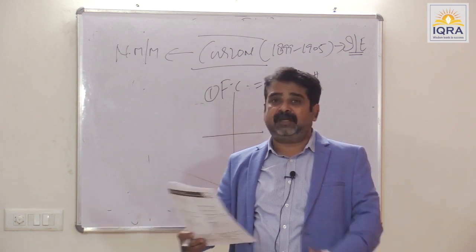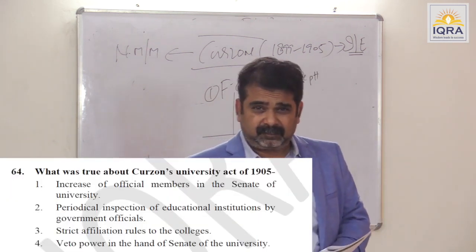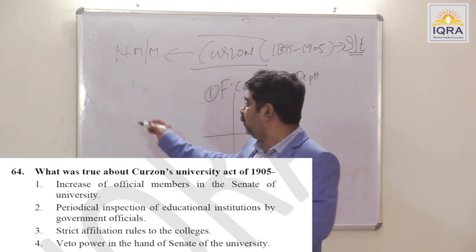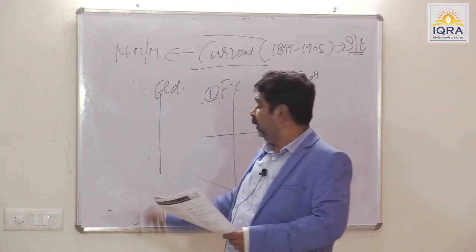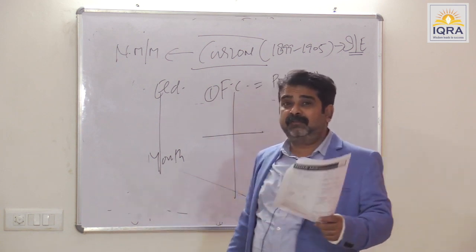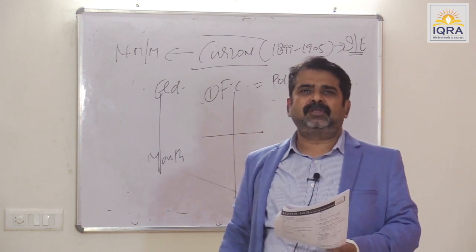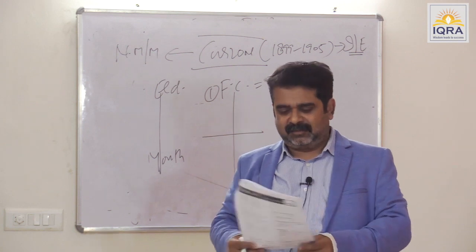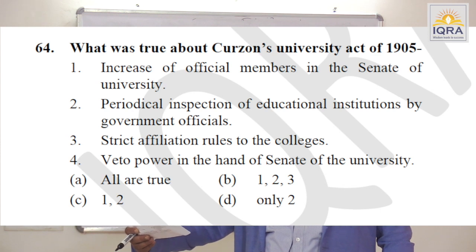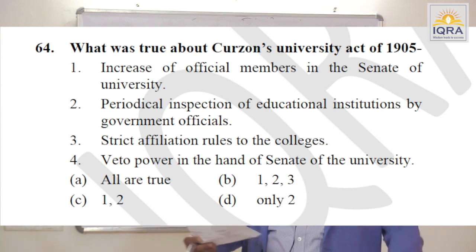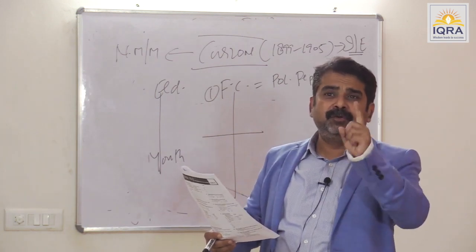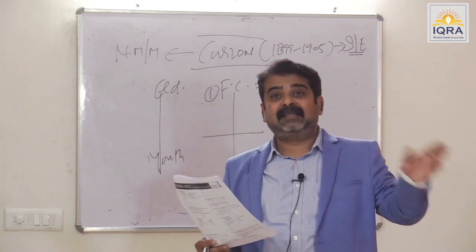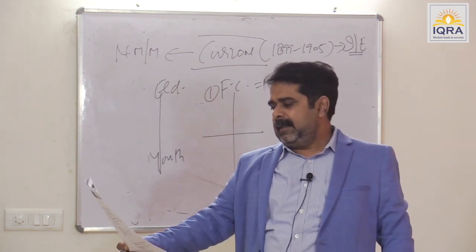What was true about Curzon's University Act of 1905? Extremists were gaining ground; youth from colleges and universities implement political policies. University Act: increase of official members in Senate of Universities — correct; periodical inspection of educational institutions by government officials — true; strict affiliation rules to colleges — true; took power into the hands of the Senate — true. All are true. The motive was to control the entry of youth in national politics, though Curzon said he wanted to improve higher education. Answer is A.